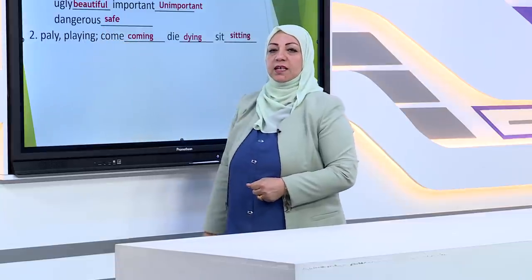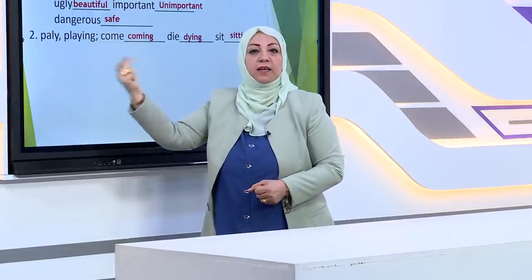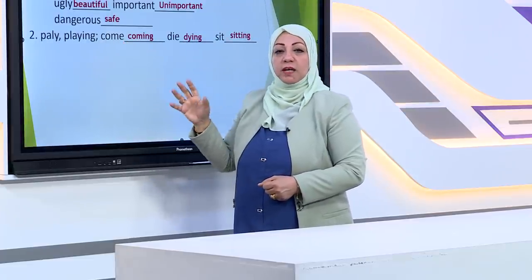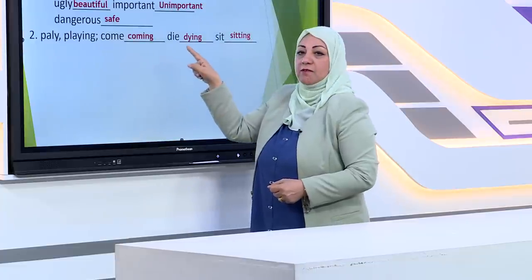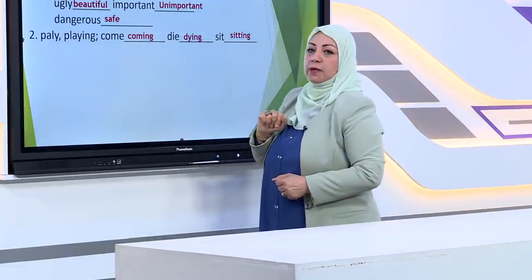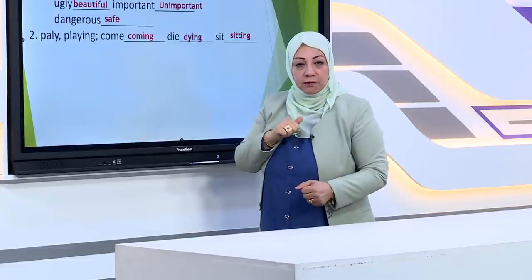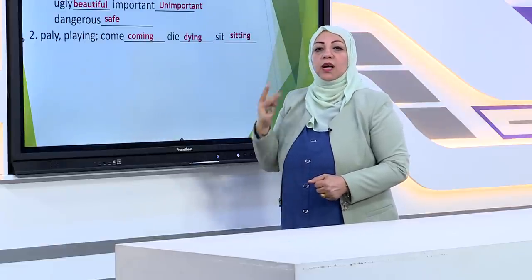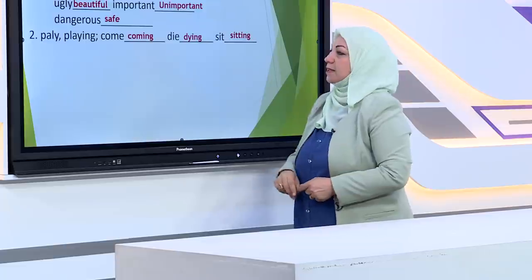Dangerous — the opposite is safe. Then we have the relationship of adding -ing: play → playing. So add -ing to 'come' — but 'come' ends in E, so remove the E and add -ing: coming. For 'die,' 'tie,' 'lie' ending in -ie, change -ie to Y then add -ing: dying. For 'sit' — one syllable, ending in one consonant preceded by one vowel — double the last letter and add -ing: sitting.